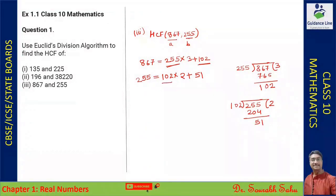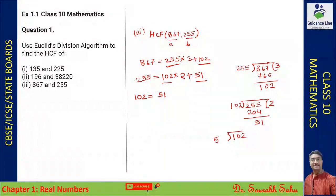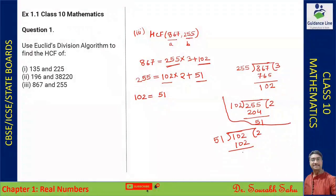Since the remainder is non-zero, 102 becomes the new a and 51 becomes the new b. Now I am dividing 102 by 51: 51 × 2 = 102, with remainder 0.